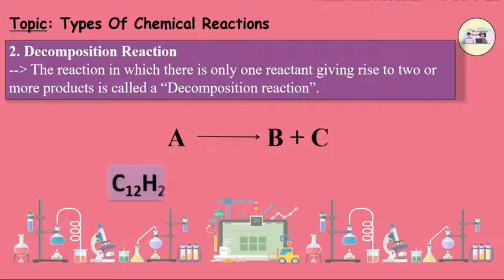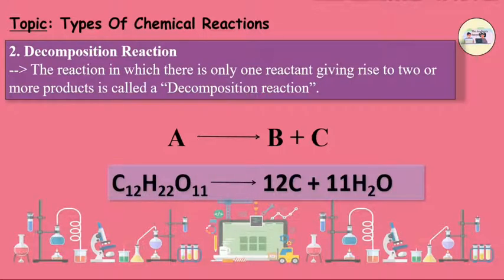For example, C12H22O11 produces 12C plus 11H2O. A single reactant sugar is divided into two substances, C and H2O.